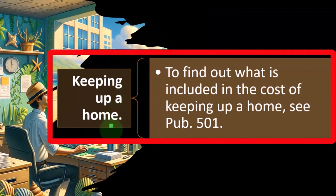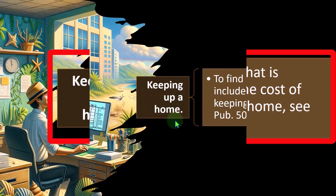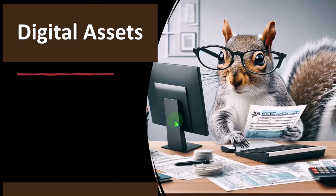Keeping up a home — we've seen this in the code. What does it mean to keep up a home? That would be part of the things for some of the possible dependent situations in order to claim, say, head of household or something like that. To find out what is included in the cost of keeping up a home, you can see Publication 501. If you're in a situation where you don't know if you've paid enough — over half of the support or enough to qualify for keeping up the home — and you want to go through the calculations on that, then you could take a look at Publication 501 and drill into that in a bit more detail.